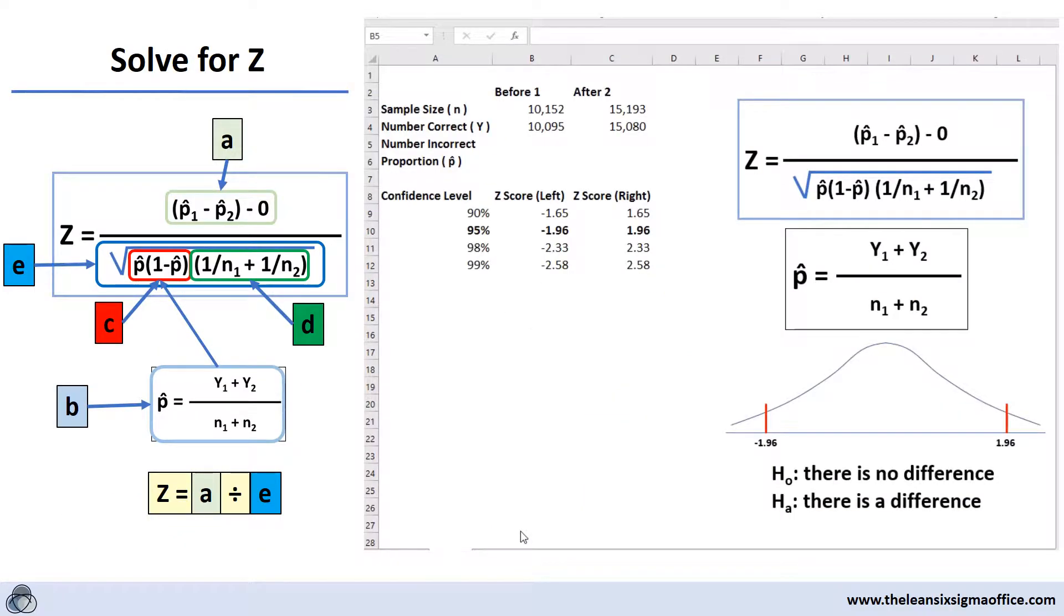In this example, we have a before and after picture. Maybe there is some sort of a change that we made to our process. What we want to know is after we have implemented the change, are we more successful, are we less successful, or is there no difference to our results. As you can see, we have increased the number correct since we've made the change, but we've also increased the sample size so we're processing more.